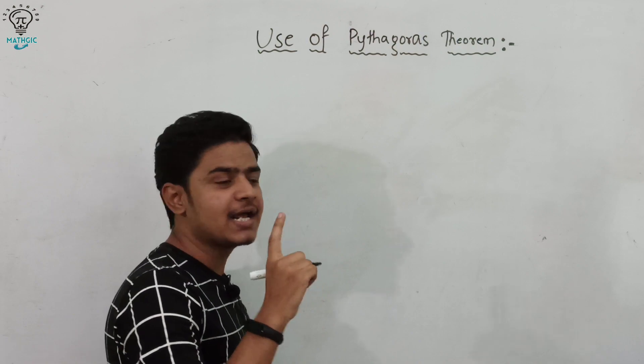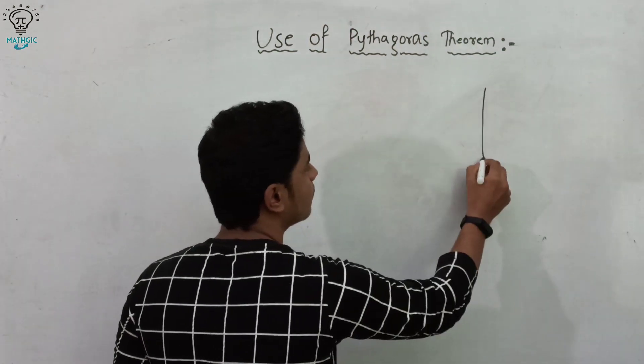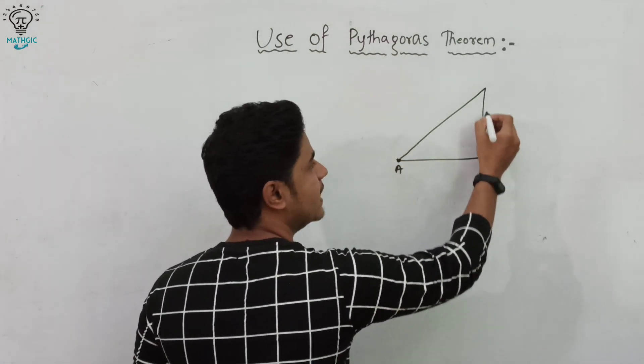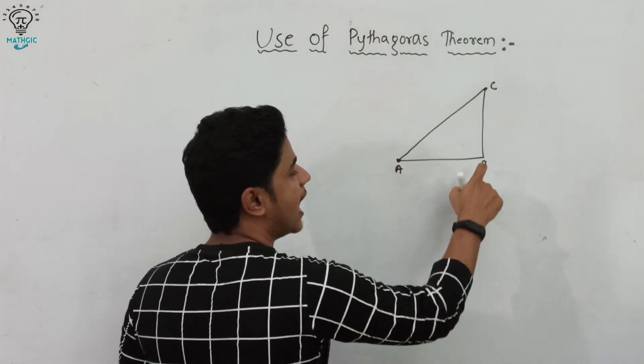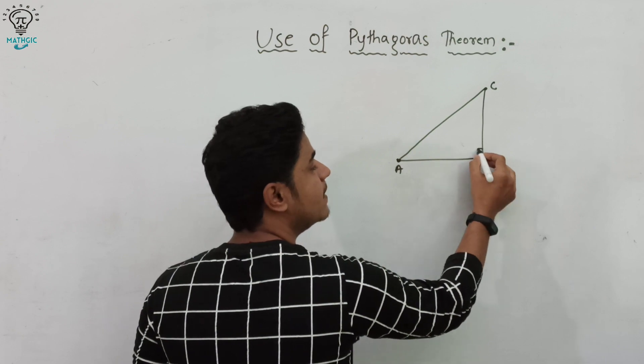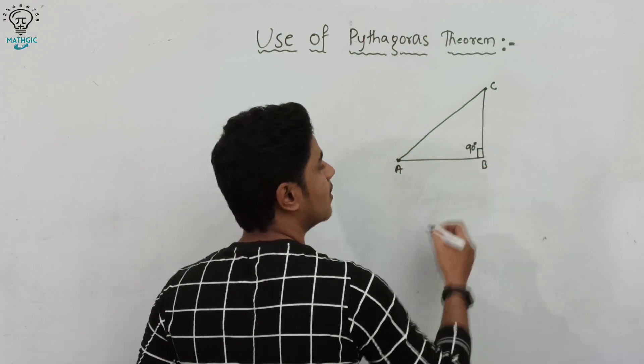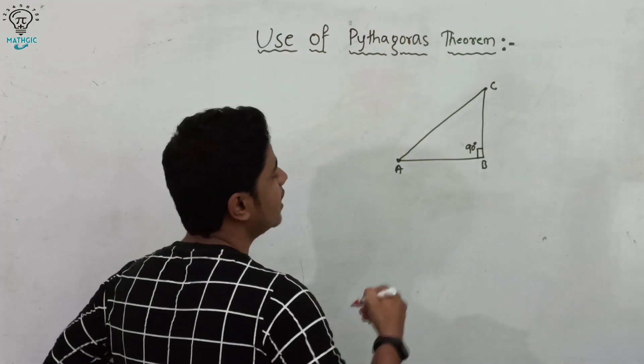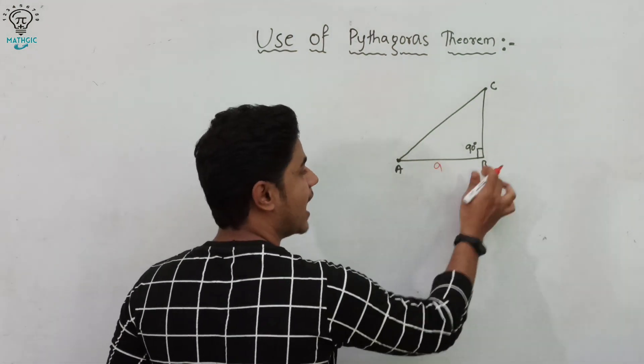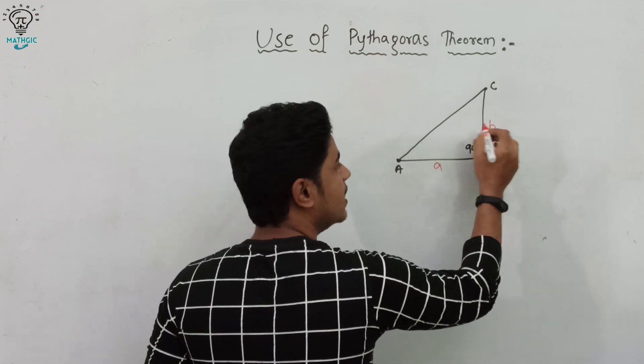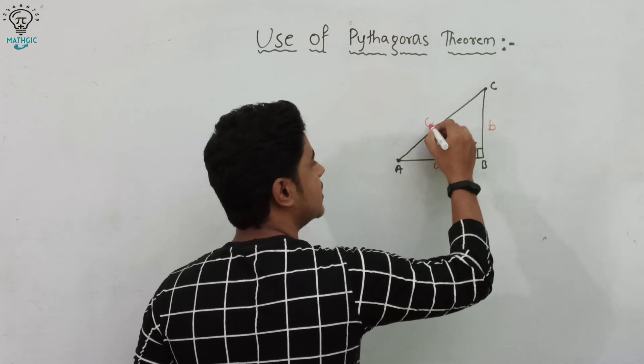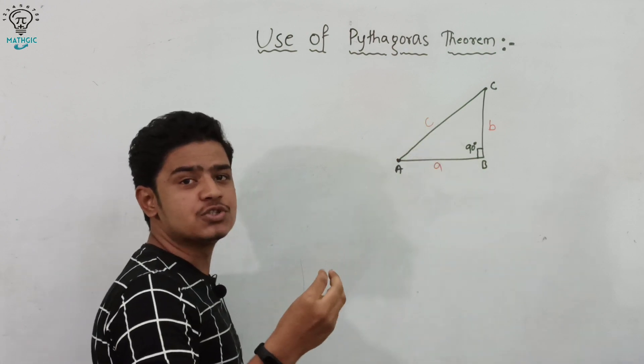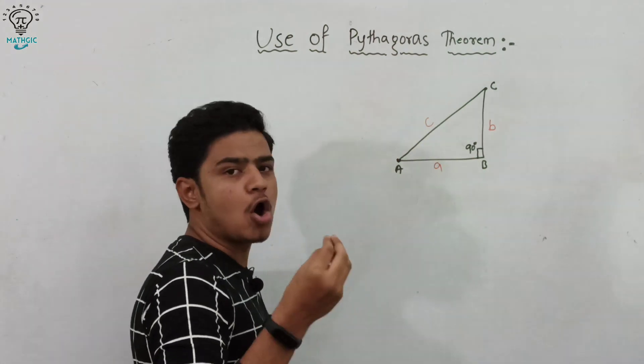Pythagorean theorem is applicable only on right angle triangle. So let's draw point A, point B, and point C, and the point B must be 90 degrees, means right angle triangle. The length from A to B is a, from B to C is b, and from A to C is c. A, B, and C are magnitudes, must be in kilometer or in meter.